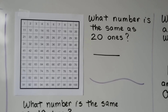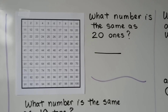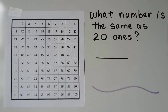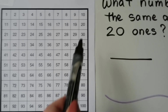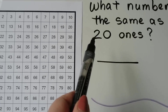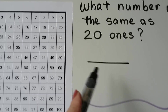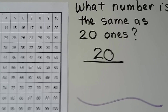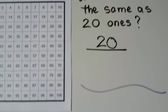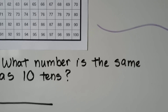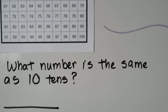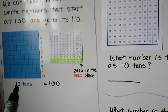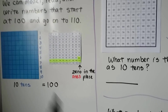We can use the hundred chart. What number is the same as twenty ones? If we had twenty ones, we would have two tens and zero ones — we'd have twenty. What number is the same as ten tens? Ten tens is equal to 100.